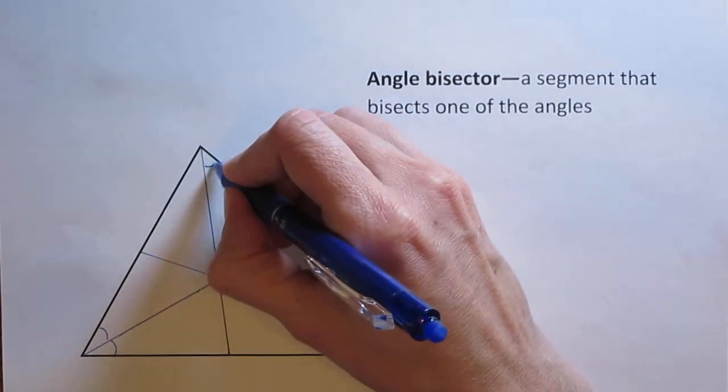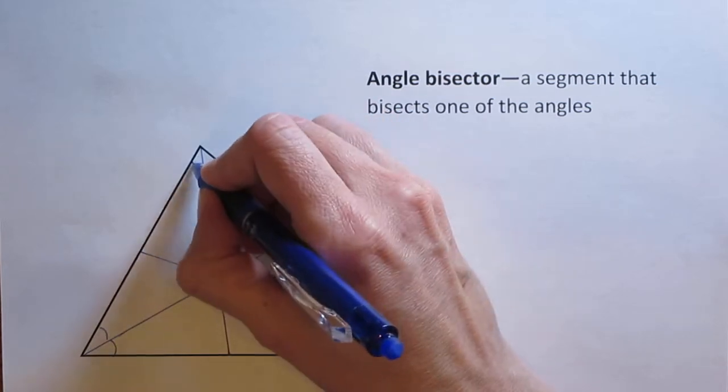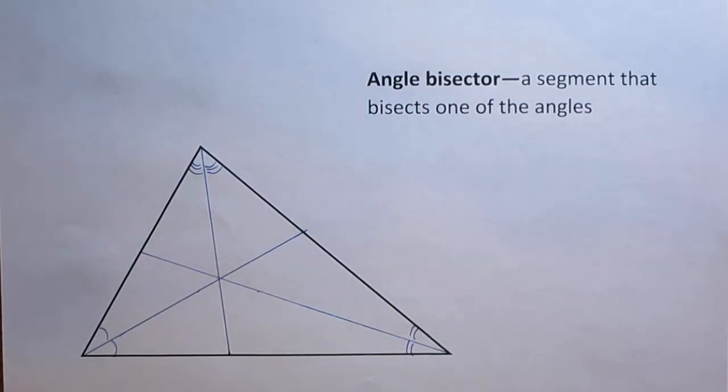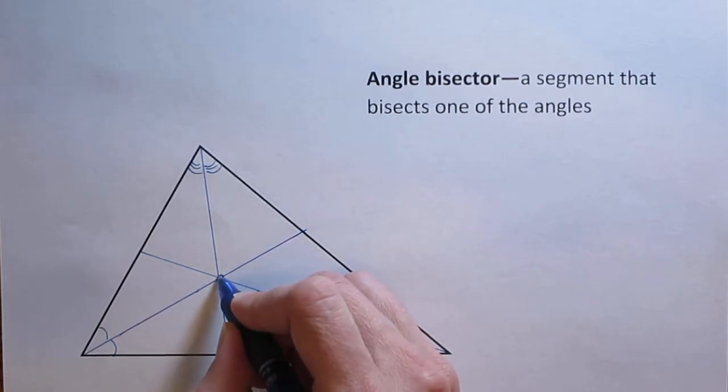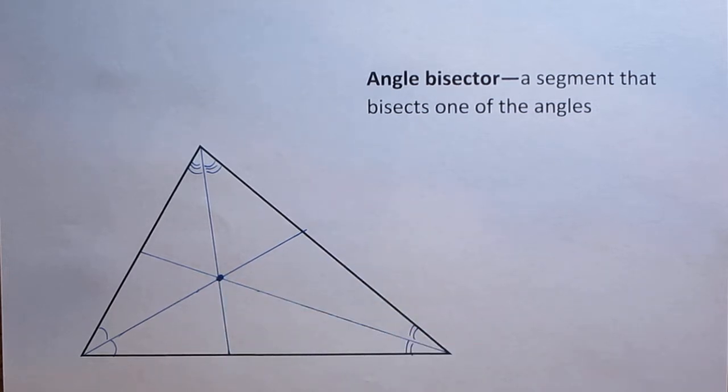And now I've bisected my third angle. I've got two congruent angles there, two congruent angles here, and two congruent angles here. Also, all of my angle bisectors should meet at one common point. And that common point is called the in-center. All of the angle bisectors will meet at the in-center.